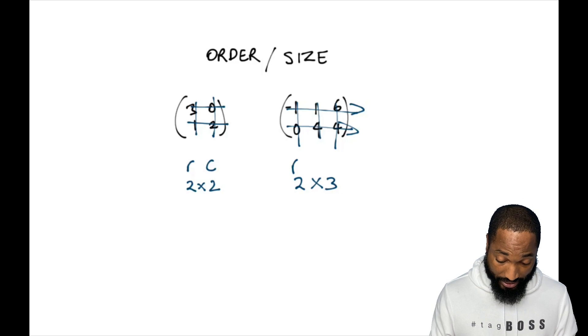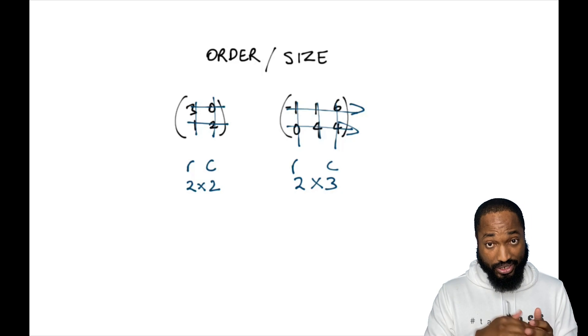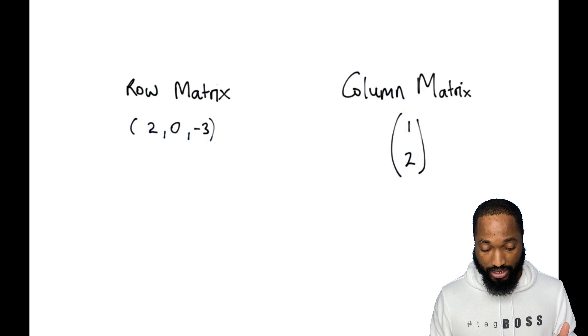You need to remember: rows first, column second, all the time. For matrix multiplication, which we're not doing today, rows first, columns second. Rows first, columns second. Order and size.